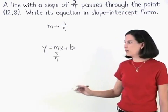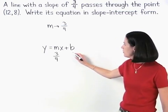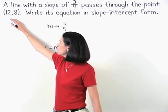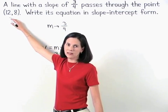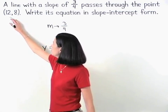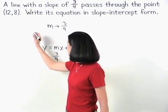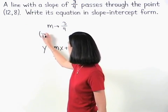Next, to find the value of b, we're given that the line passes through the point 12, 8, which means that we can use 12 and 8 as our values for x and y.